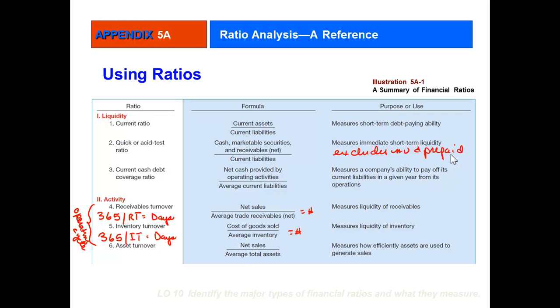The second set of ratios have to do with activity, looking at the quality of different assets. Receivables turnover ratio is net sales over average trade receivables. Remember, an average is beginning of year plus end of year divided by 2. The receivable turnover number tells you how many times during the year your receivables refresh themselves—is it 5 times a year, 6 times, 12 times?